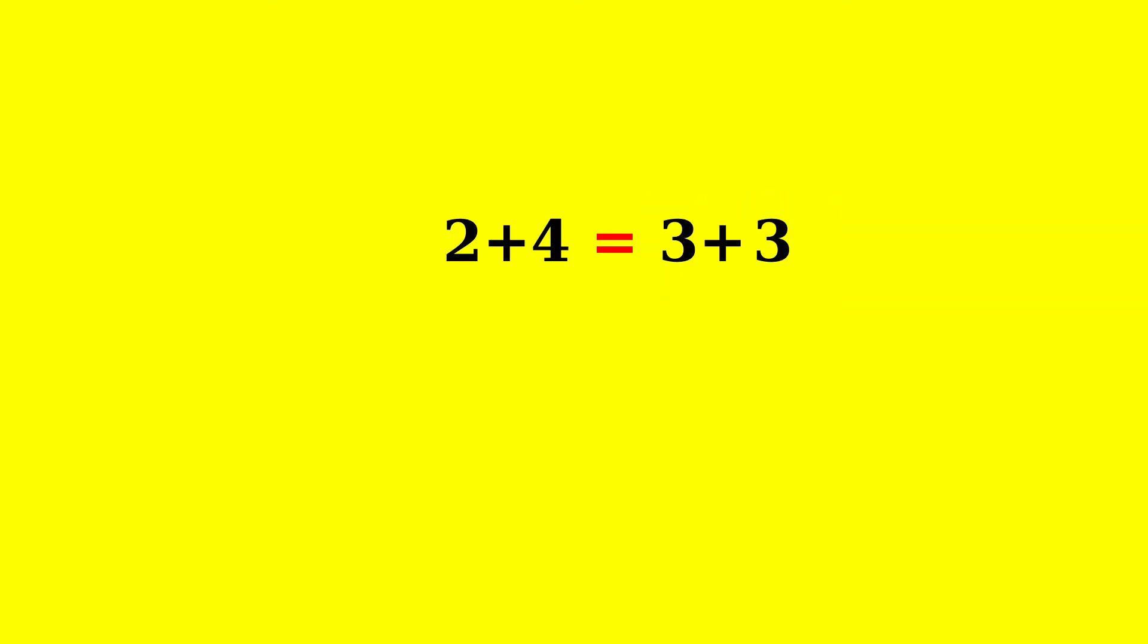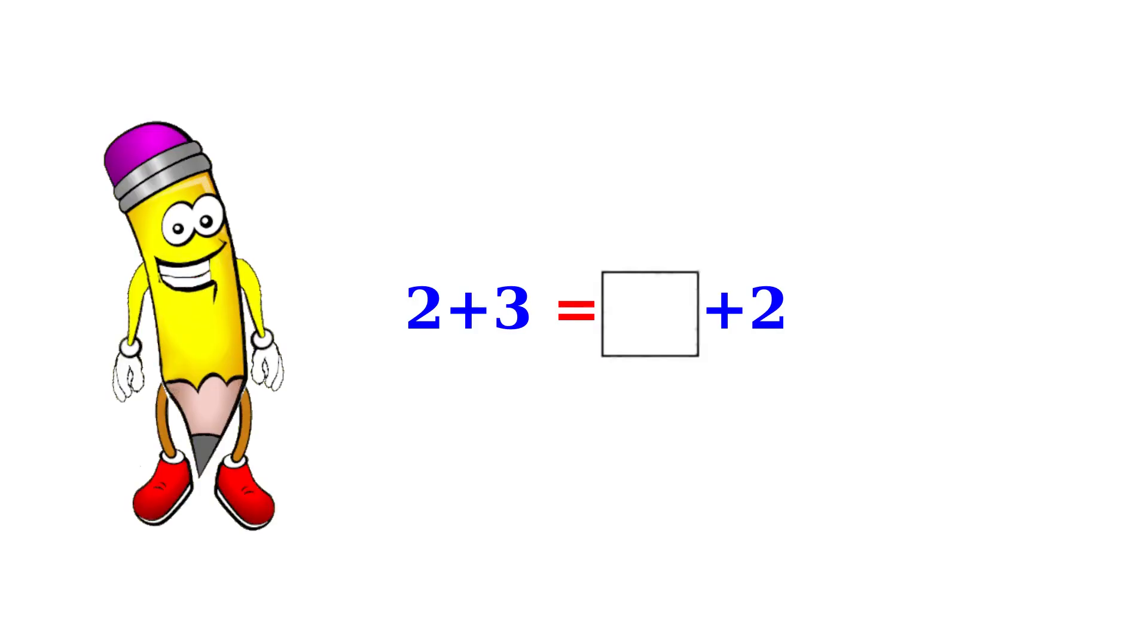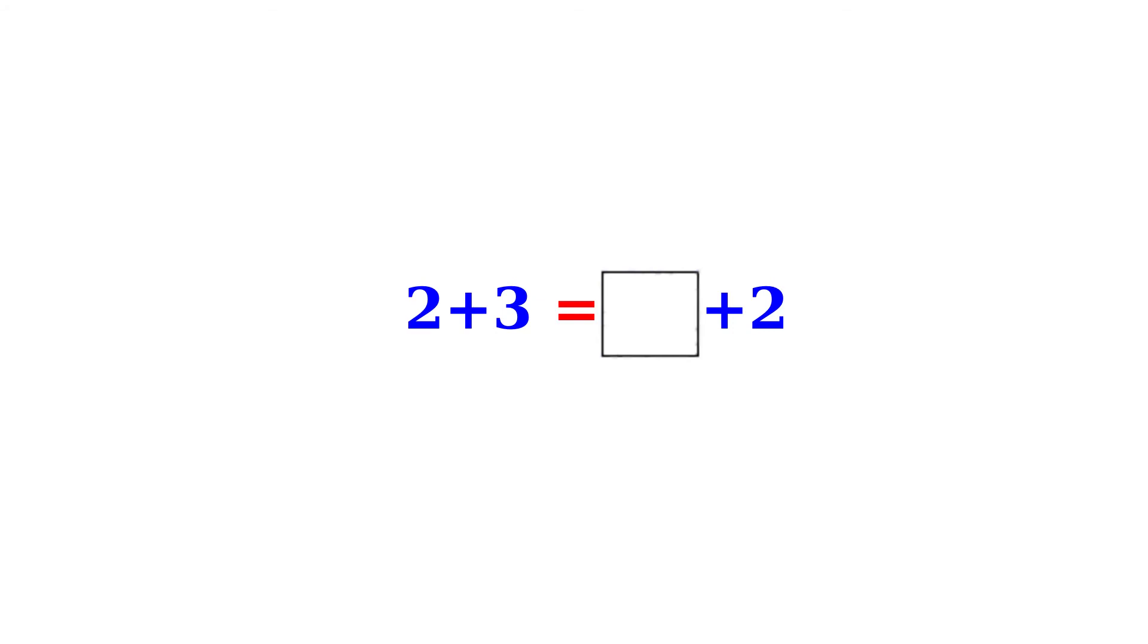That is now a balanced equation. 2 plus 3 equals blank plus 2. 2 plus 3 on the left side equals blank plus 2. That's easy. 3 plus 2 also equals 5.